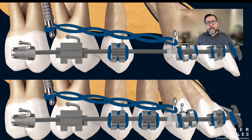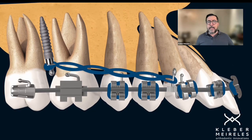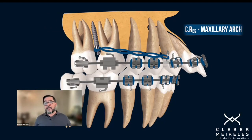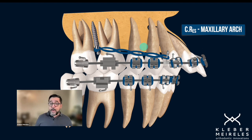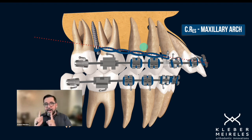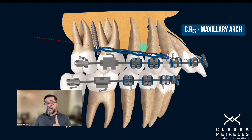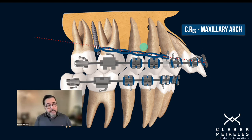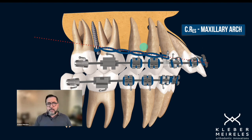I'm doing the distalization to correct the Class II relationship between upper and lower. The center of resistance of the maxillary arch is positioned approximately 5-6 millimeters high in relation to the center of the premolar crowns and in between them. So I'm doing the retraction using the line of action of the force in a lower position relative to the center of resistance of the maxillary arch. For that, I must secure rigidity so the maxillary arch can be considered as one piece.